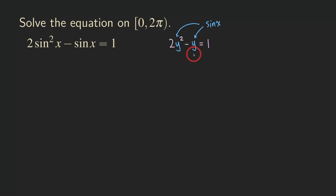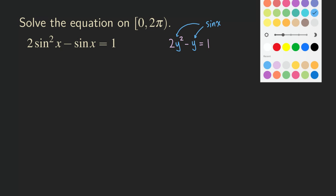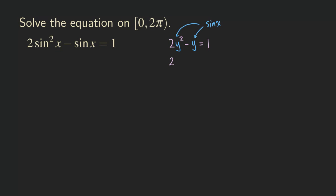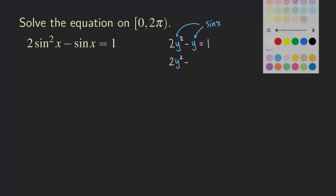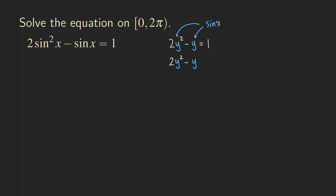How do we solve this quadratic equation? One way is to factor it, or we can try to use the quadratic formula. Before we do that, we need to get everything on one side of the equation and then have 0 on the other side. So we get 2y squared minus y minus 1 equals 0.